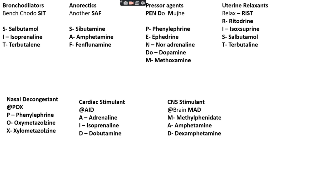To remember pressure agents, we use the mnemonic 'Pen Do Muje': P for Phenylephrine, E for Ephedrine, N for Noradrenaline, Do for Dopamine, M for Methoxamine.